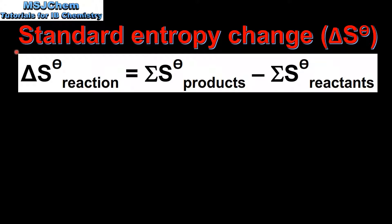Next we'll use the absolute entropy values to calculate the standard entropy change of a reaction and we'll use this equation. The standard entropy change of reaction equals the sum of the absolute entropy values of the products minus the sum of the absolute entropy values of the reactants.